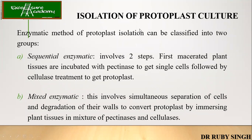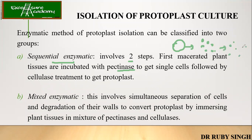Enzymatic method of protoplast isolation has two types: sequential and mixed enzyme. In the sequential method, there are two steps. First, tissues are incubated with pectinases, which separates clusters into single cells. This is followed by cellulase treatment to release single isolated protoplasts. In the mixed enzymatic method, it involves simultaneous separation of cells and degradation of the cell wall — a mixture of both pectinases and cellulases is used at the same time.